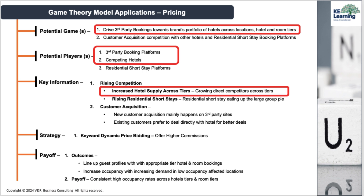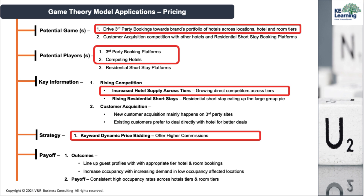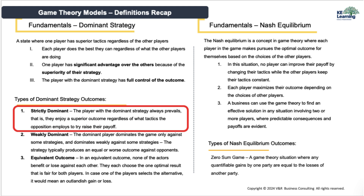We've decided to go with dynamic price bidding, which requires us to do real-time bidding using predictive personalization for each potential guest in order to ensure that we match the right guest with the right room, while also doing real-time inventory management to ensure that we achieve the right spread of occupancy across the hotels in our chain for a set of given locations and regions. While some work might be required technology-wise to arrive at this type of real-time predictive personalization, price bidding, and inventory spread balancing, it puts us in a highly desirable, strictly dominant position, so it is well worth it.